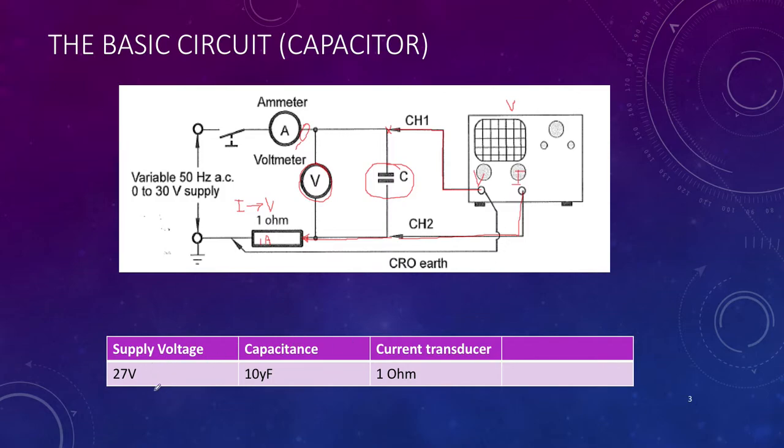Our power supply for this activity is 27 volts AC. We're using a 10 microfarad capacitor and we've got a 1 ohm resistor as our current transducer in the circuit.